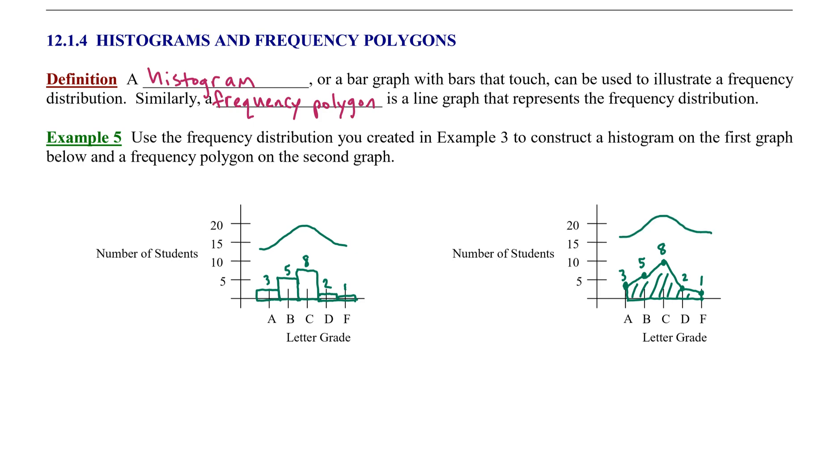These resemble what we call a bell curve. A bell curve is something we'll study in the last section here, Section 12.4, but it shows that most students are tending towards the center. Most students make C's, fewer make D's and F's, and fewer make A's and B's.